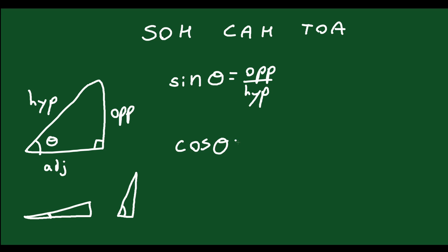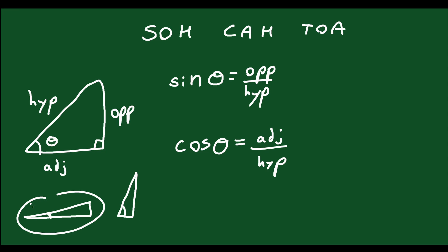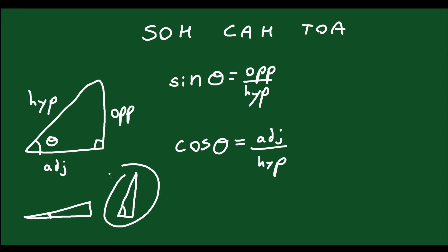CAH stands for cosine: cos of theta equals adjacent over hypotenuse. It's comparing the base length to the hypotenuse. For a short, wide triangle, cos would be close to 1 because the adjacent side is almost as long as the hypotenuse. For a tall, skinny triangle, cos would be close to 0. So cos and sine work opposite to each other — a tall triangle gives a big sine but small cos, and a short triangle gives a small sine but big cos.